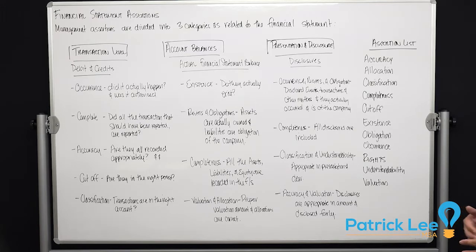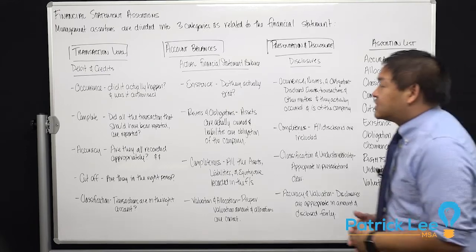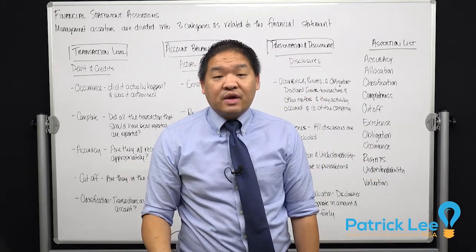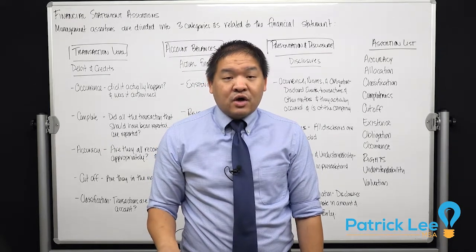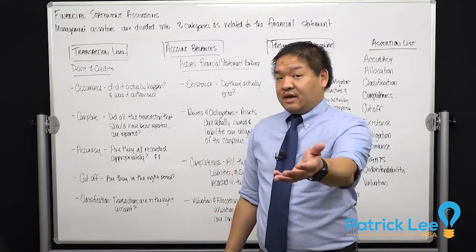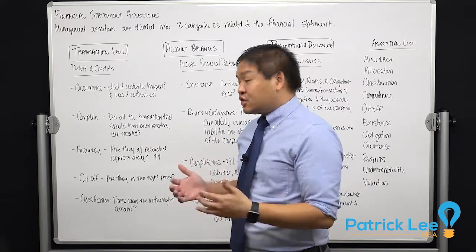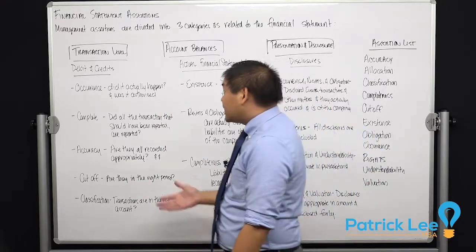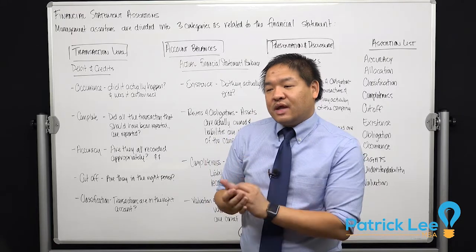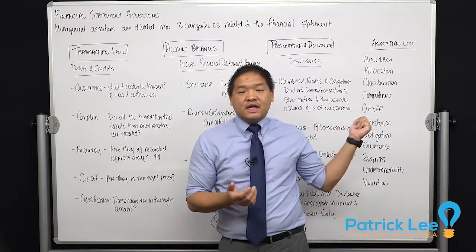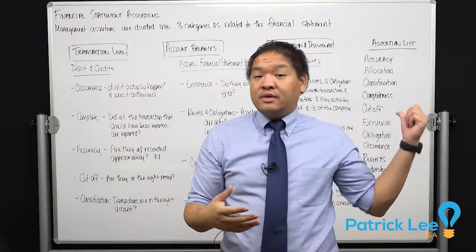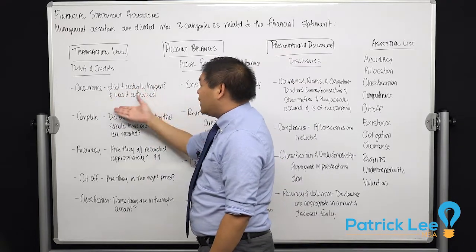Now we're going to take these assertions and classify them into the three sections. Starting with the transaction level — this is the actual debits and credits. When management puts a journal entry into their books, they are asserting five things and we need to test those five things. First, they assert that the transaction actually occurred and was authorized. Authorization is a subsection of occurrence, so it's included there rather than listed separately.